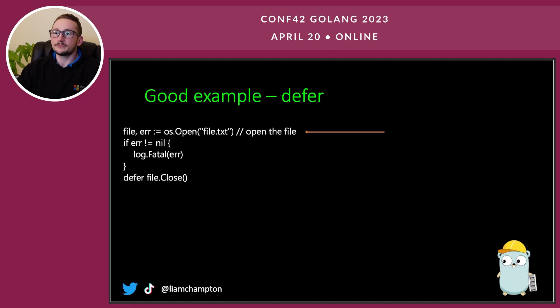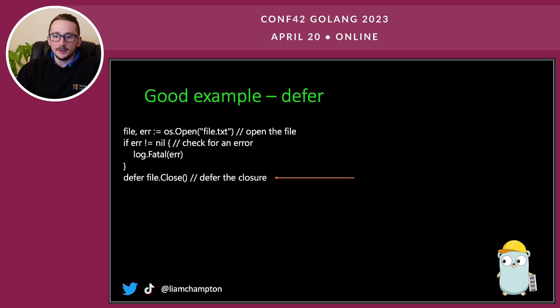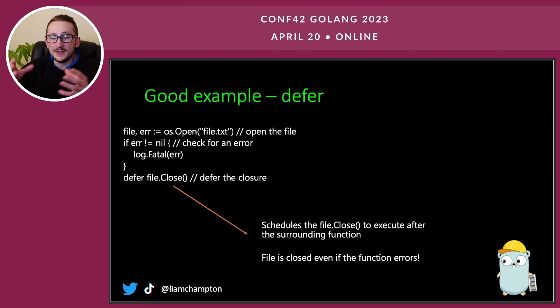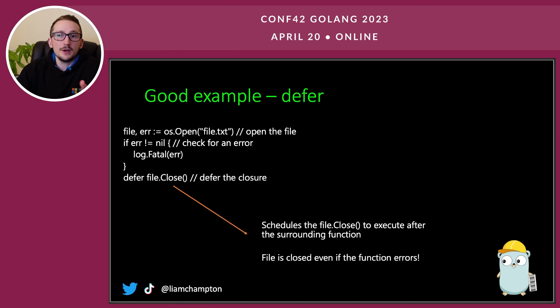Here's a good example of the defer keyword. In this bit of code, we're opening file.txt. We then check for an error, which is pretty typical. And then we defer the closure. This file.close will execute after the surrounding function, which means that even if the function fails or doesn't complete processing properly, the file is still closed. That's really important because we don't want to leave that open. Network connections, database sockets, files — things you don't want to leave open, as that can also create security vulnerabilities.